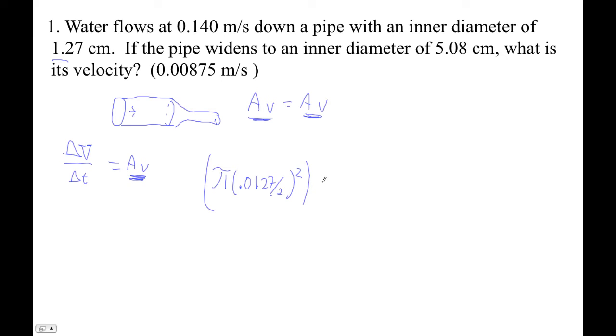Times the velocity, which is 0.140 meters per second. Did I say volume? Velocity is really what we're talking about here. And then where it gets wider, our area is pi times 0.0508 divided by 2 squared. There's my area, and we don't know this velocity.